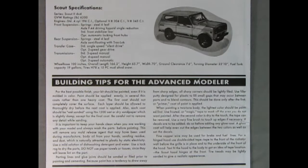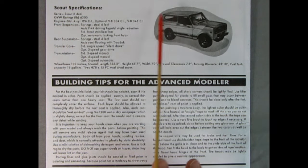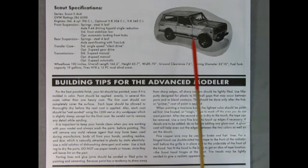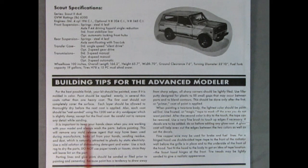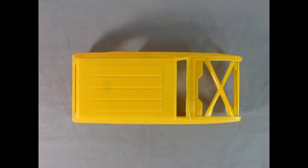And then they give us more photographs of the model and details on the decal instructions, where to put your decals on your kit. On the back of the instruction sheet, we have our scout specifications, as well as this wonderful three-quarter front view of the model. And then down here, it has building tips for the advanced modeler. Again, another great inclusion from AMT.